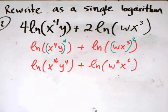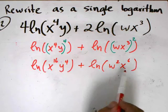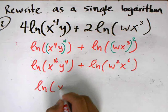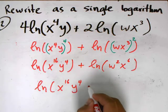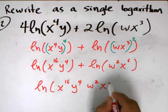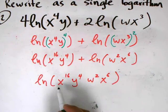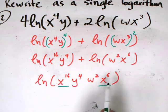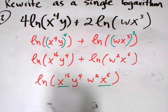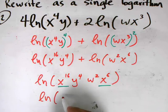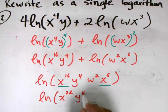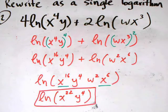I've gotten rid of all the constants in front, and now log plus another log means I use the product rule. I take the expressions inside and multiply them together: the natural log of x to the 16th times y to the 4th times w squared times x to the 6th. I can simplify further — x to the 16th and x to the 6th are both multiplied inside, so I combine them to get x to the 22nd, y to the 4th, w squared. This entire statement is now condensed to a single logarithm.